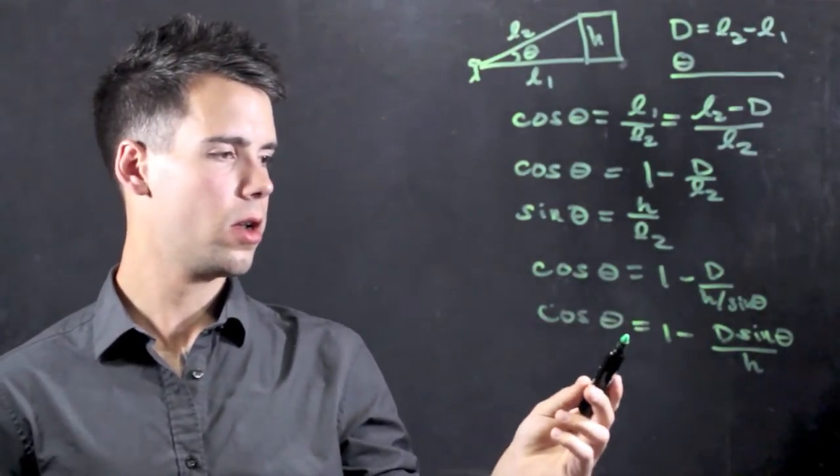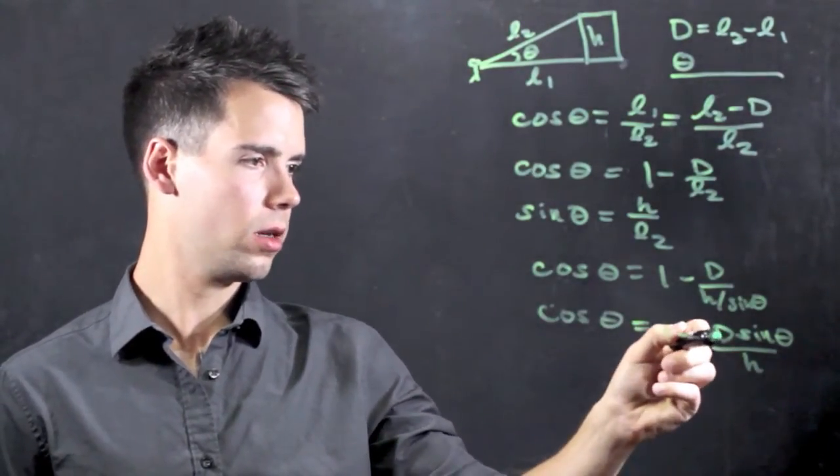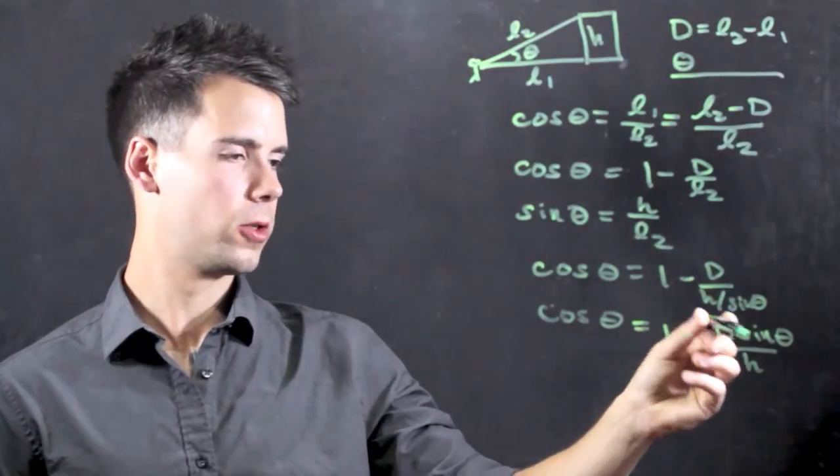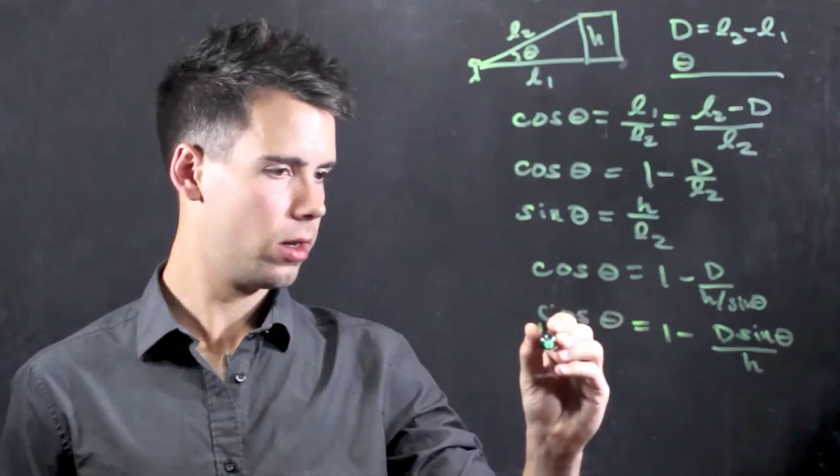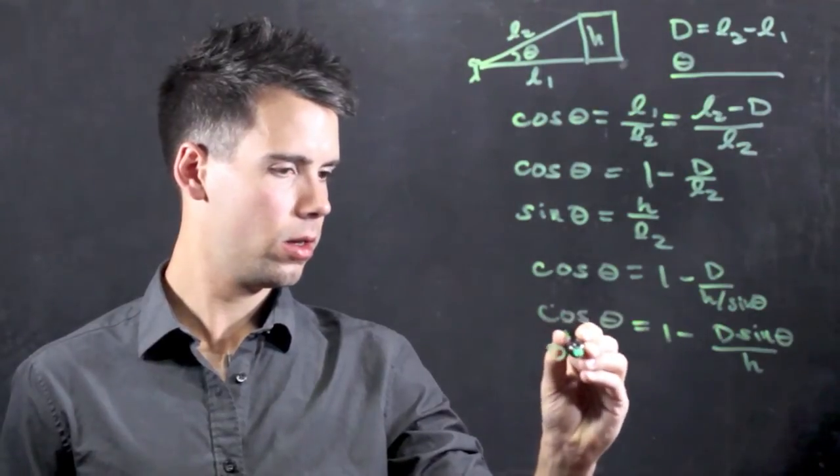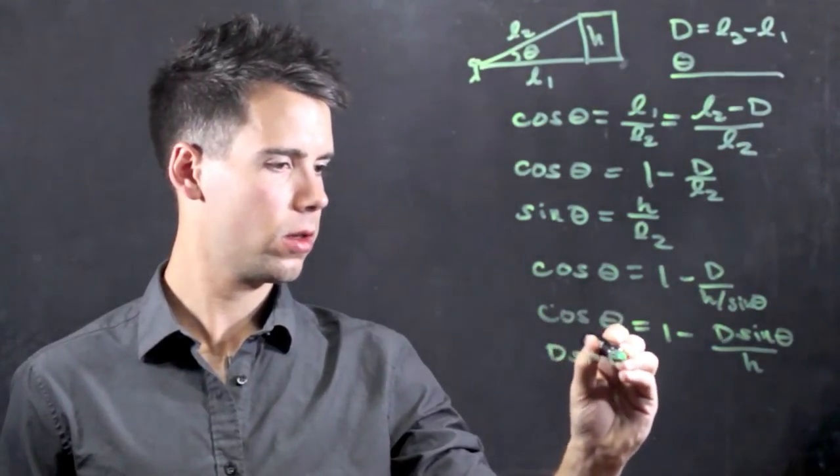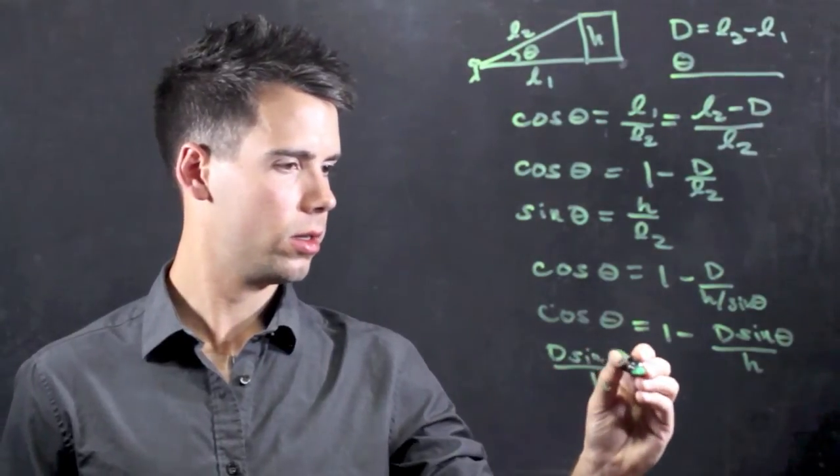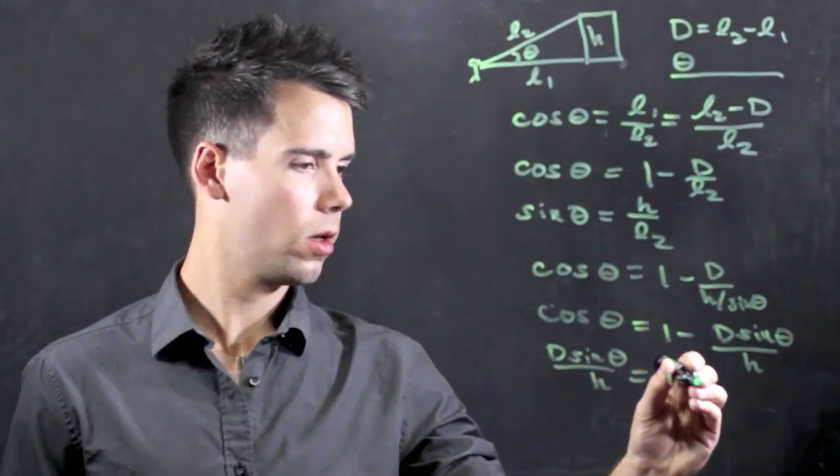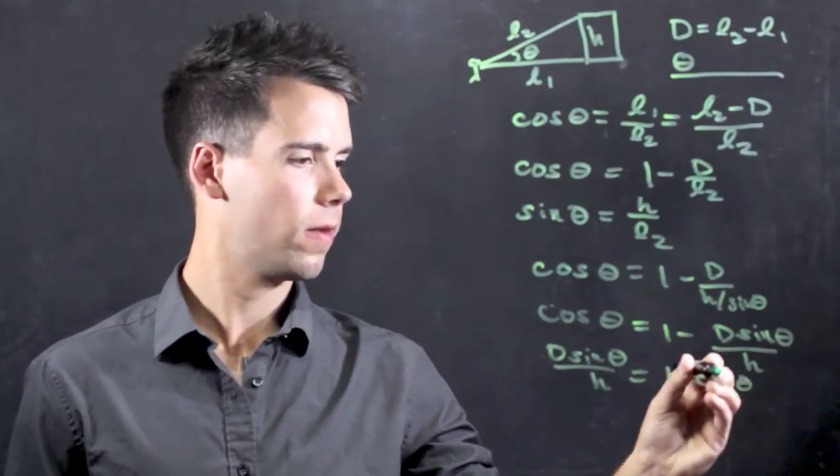Now the only thing we do not know is H. We know d, we know theta, so we can solve for H. So moving this to the left-hand side, we find d sine theta over H is equal to 1 minus cosine of theta.